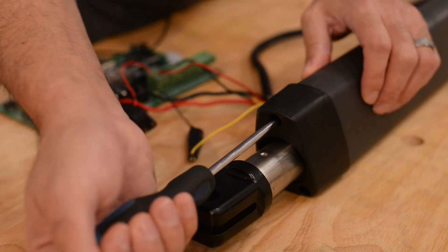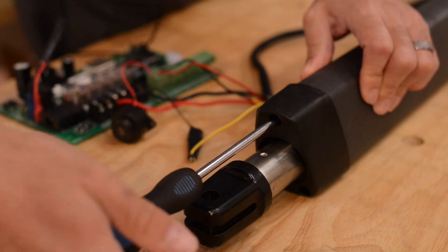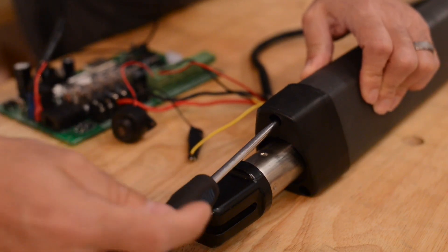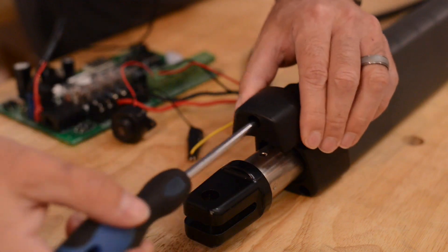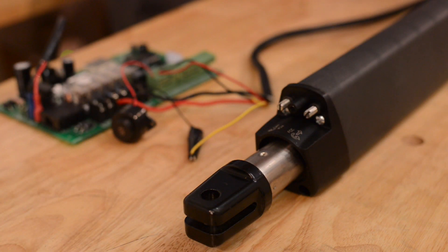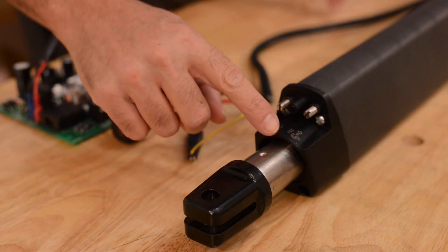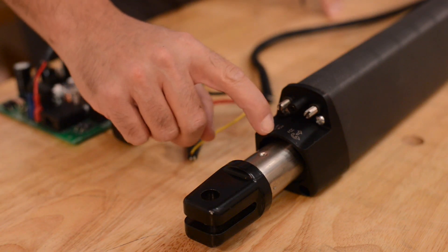We're going to take the cap off the end of the arm. And you'll notice two screws, one marked FCC, one marked FCA.